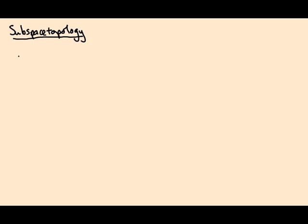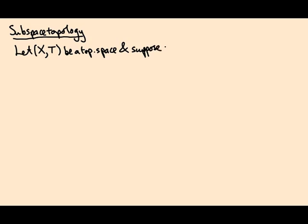We've seen what a topological space is and we've seen one way of defining a topology on a space by specifying a base. Now I want to show you another way of constructing topologies on spaces, which is really useful. So let's suppose we have some topological space X with a topology T, and suppose that Y is a subset of X.